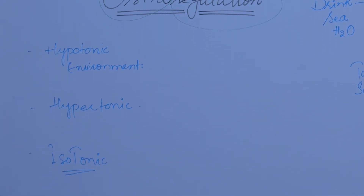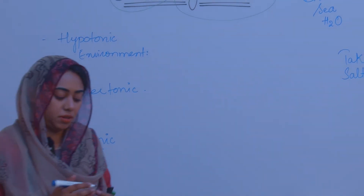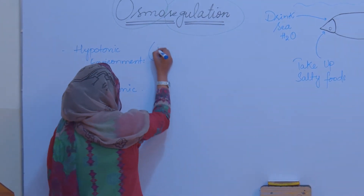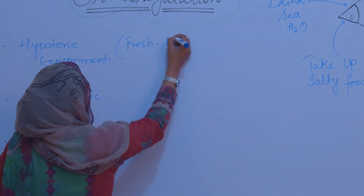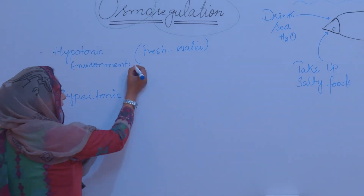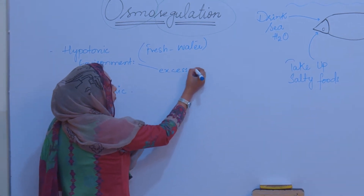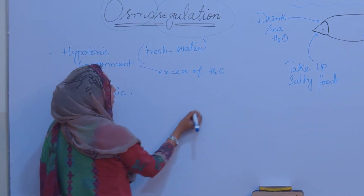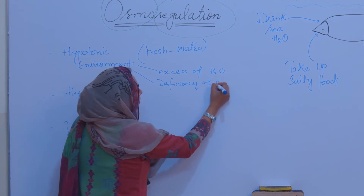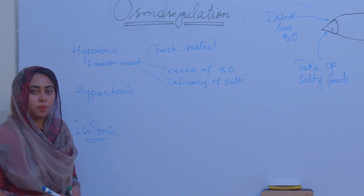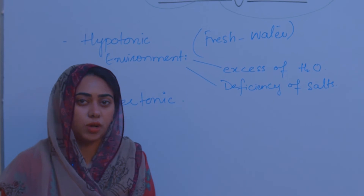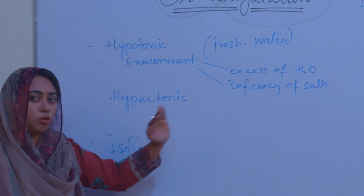A hypotonic environment refers to fresh water bodies, where there is an excess of water. The problem for organisms living there is managing that excess water. Plus, there is a deficiency of salts. So water in excess enters the body from all sides, and salt is deficient — that is the challenge in a hypotonic environment.